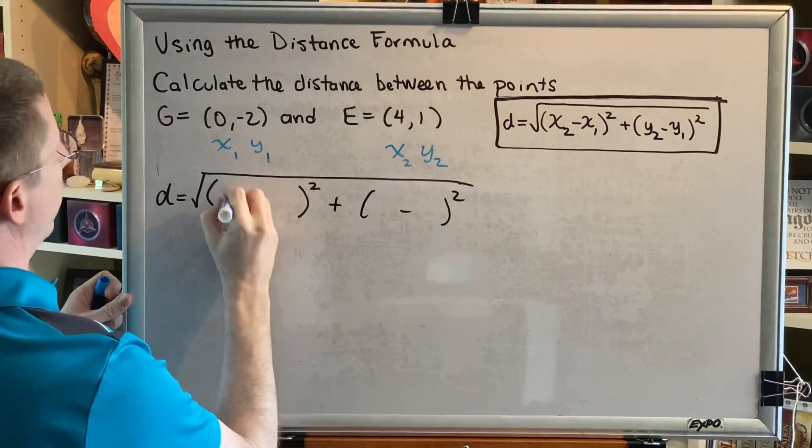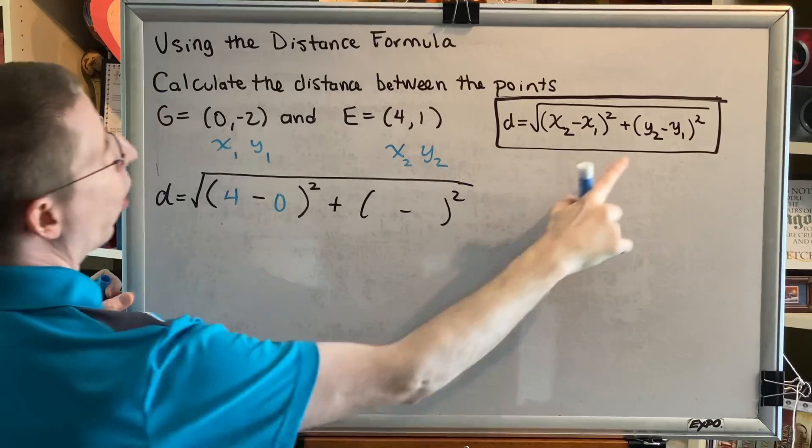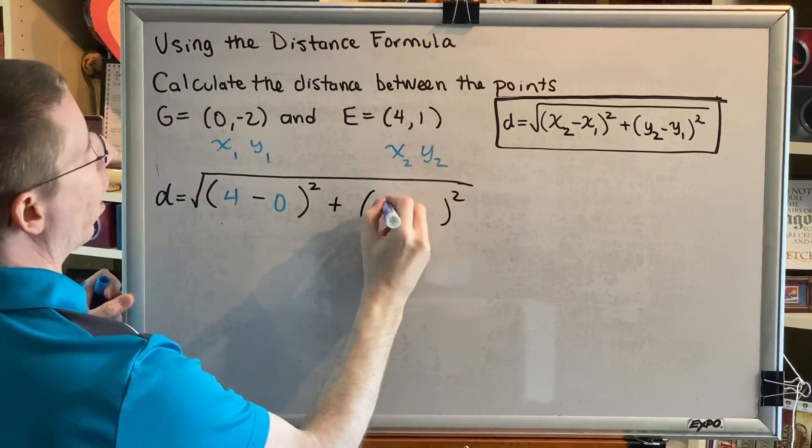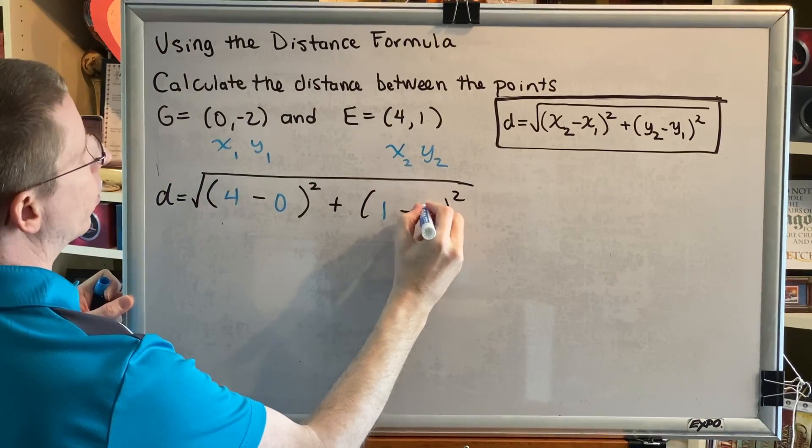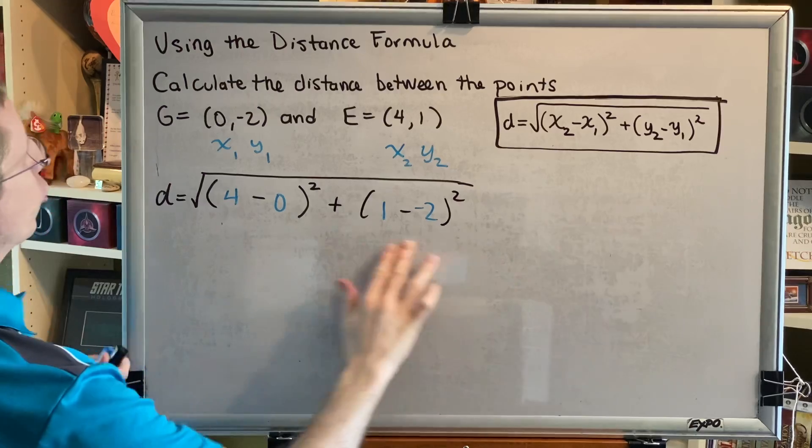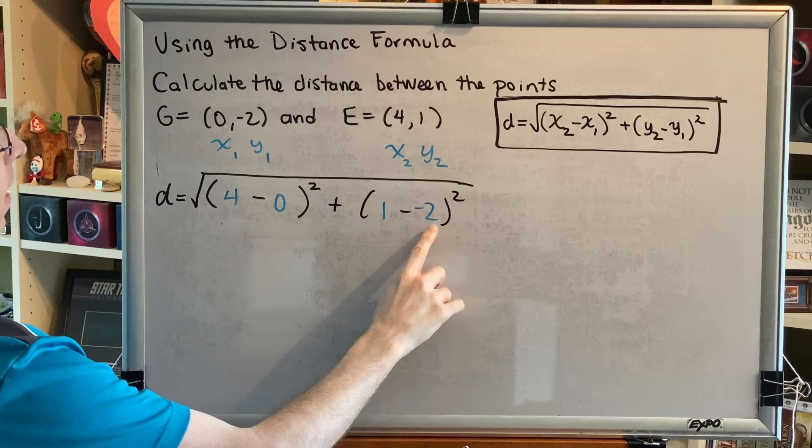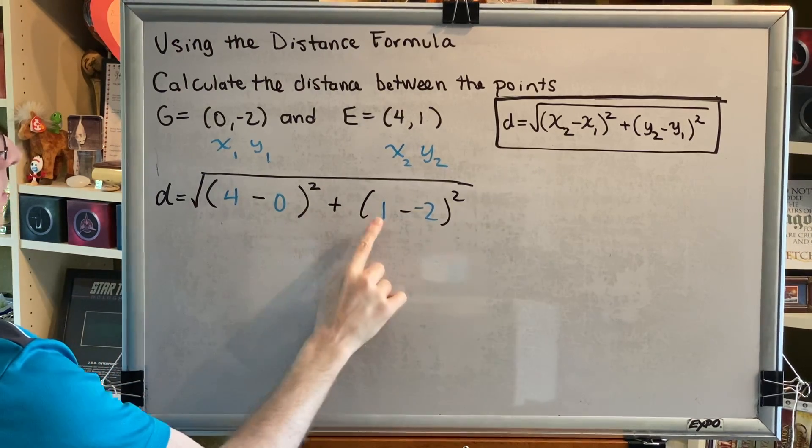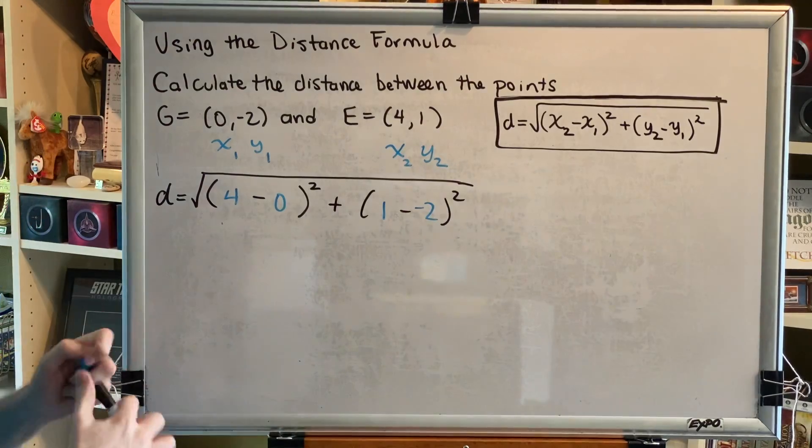Okay, x₂ is 4, x₁ is 0, y₂ is 1, y₁ is negative 2. Notice, by writing the structure of the formula first, that puts down our first hyphen. And by putting the values of the variables second, that allows us the possibility of writing our second hyphen.